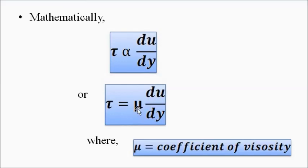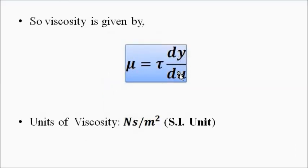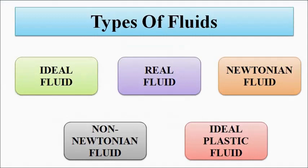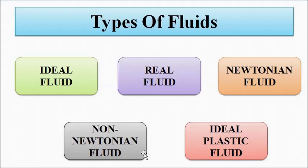So we can write tau = mu × du/dy, where mu is the coefficient of viscosity, or simply viscosity of the fluid. We can also write viscosity as tau × dy/du. This is Newton's law of viscosity. Now we are going to discuss the various types of fluids on the basis of viscosity and shear stress.